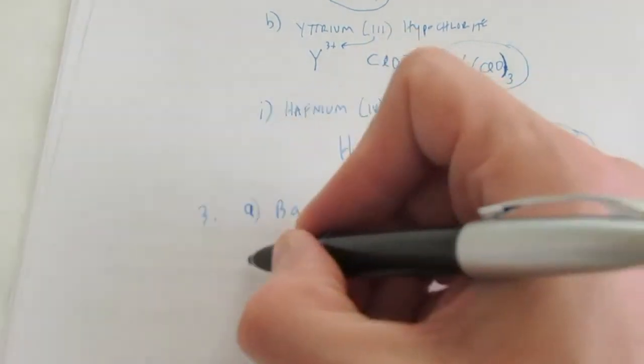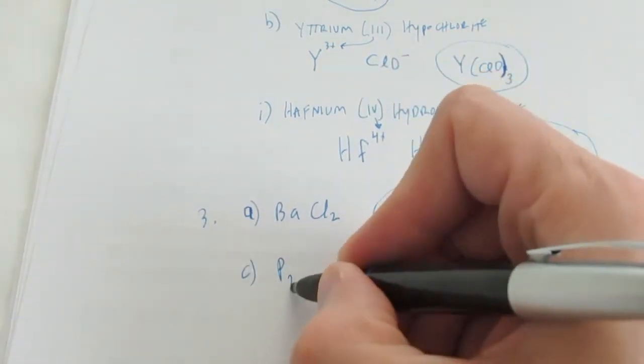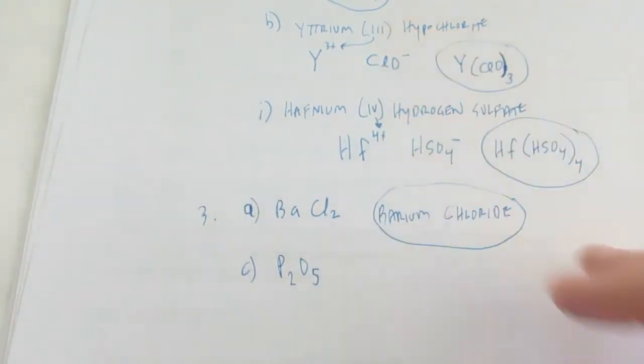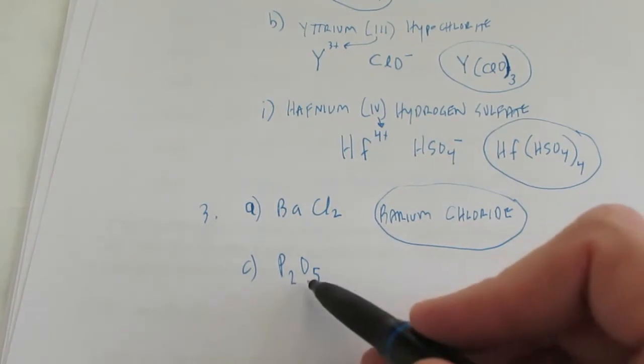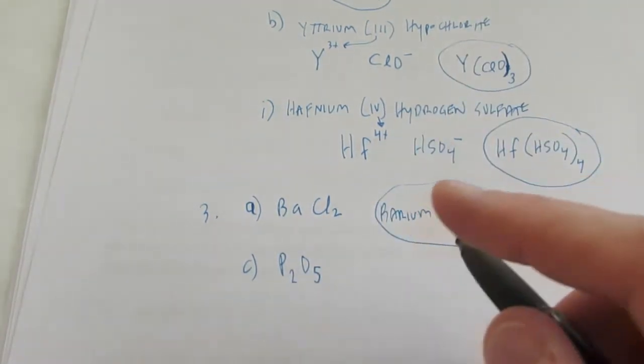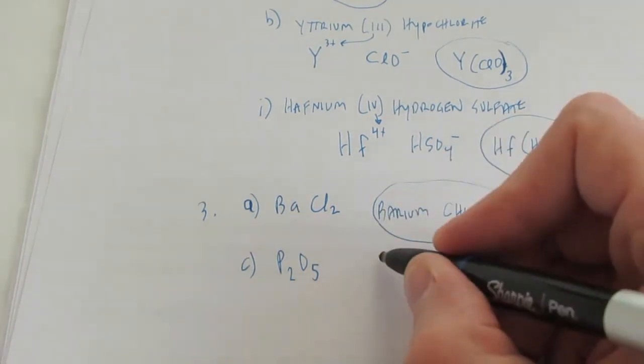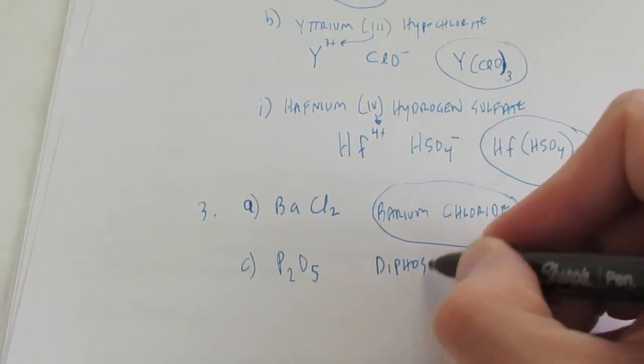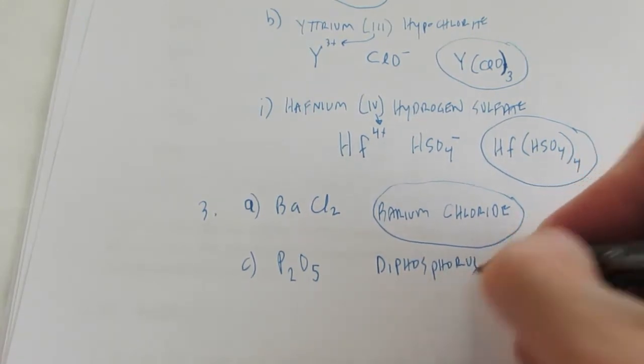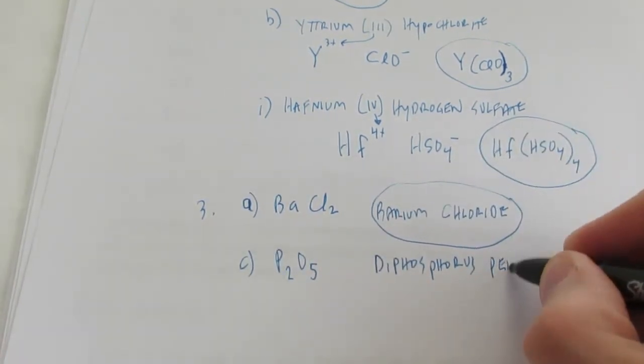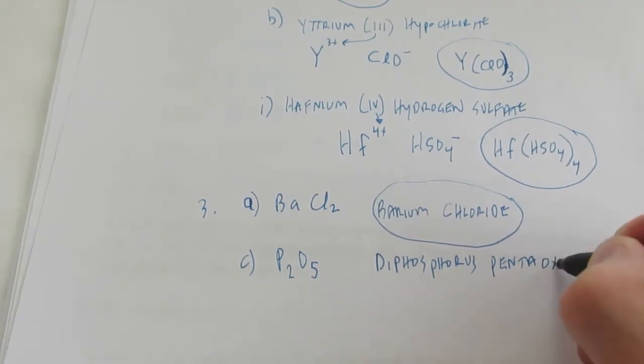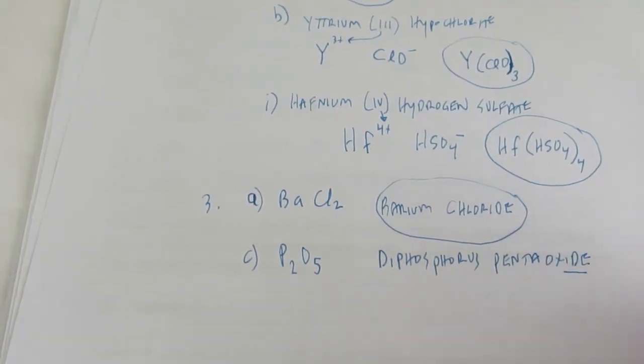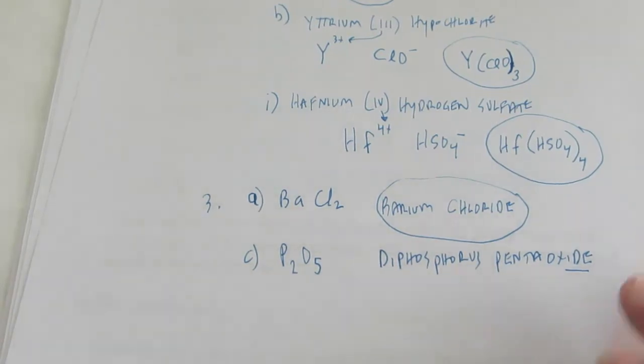Alright. Let's do letter C. And letter C is P2O5. Now, those are two nonmetals, aren't they? Both phosphorus and oxygen are nonmetals. So, you are allowed to use Roman numerals. There's two phosphoruses. So, I'd call it diphosphorus and five oxygens. So, that's pentaoxide. Remember, binary compounds are going to end in -ide.